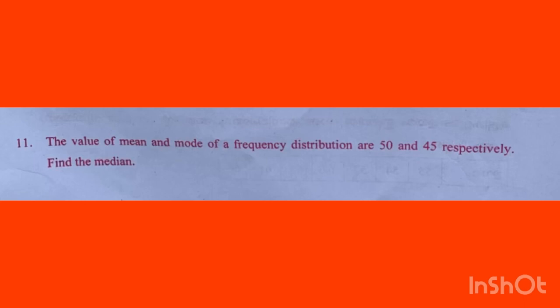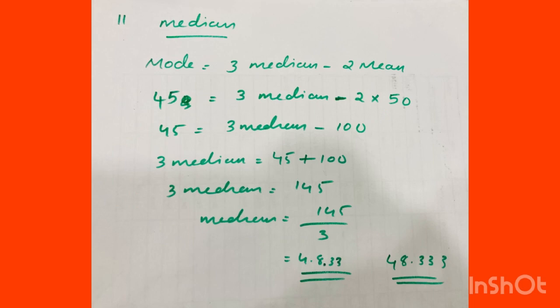The mean of a frequency distribution is 50 and the mode is 45. Find the median value using the equation: Mode = 3 Median − 2 Mean. Substituting: 45 = 3 × Median − 2 × 50, so 45 = 3 Median − 100. Therefore 3 Median = 145, and Median = 145/3 = 48.33.